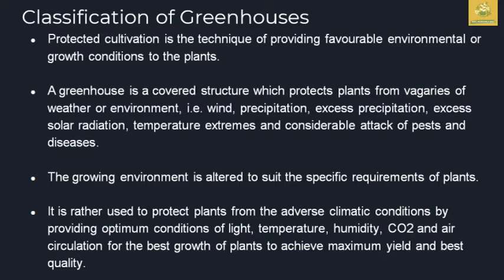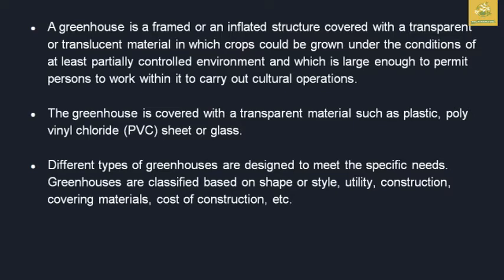The growing environment is altered to suit the specific requirements of the plant. It is used to protect plants from adverse climatic conditions and to provide optimum conditions for better growth and maximum yield. The greenhouse can be framed or inflated and covered with transparent materials such as polyvinyl chloride (PVC sheet) or glass.